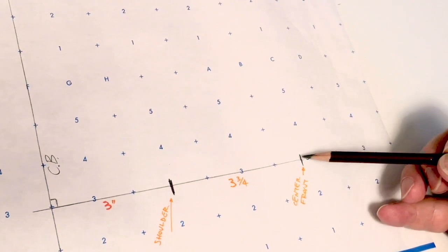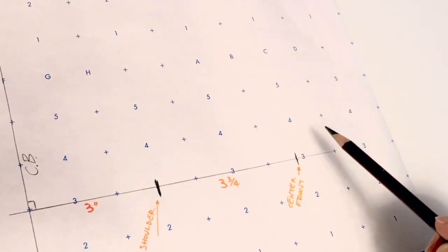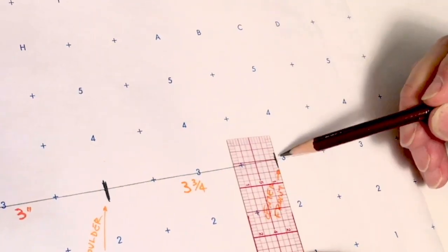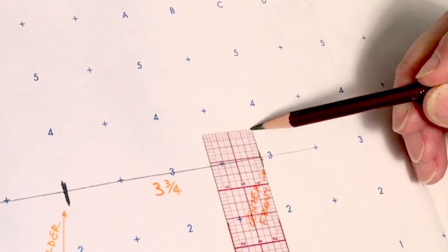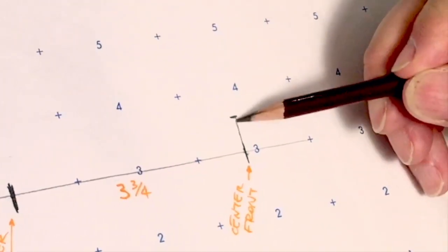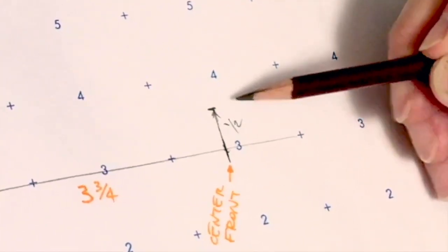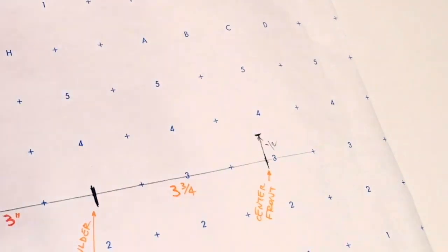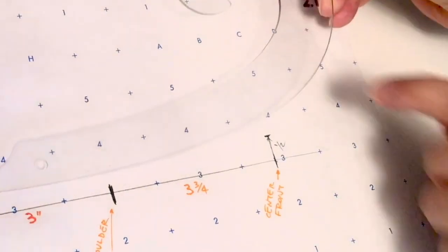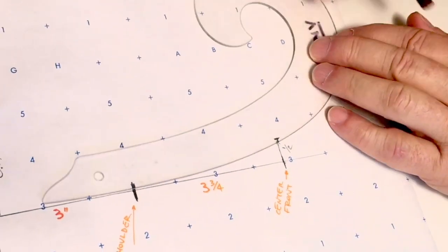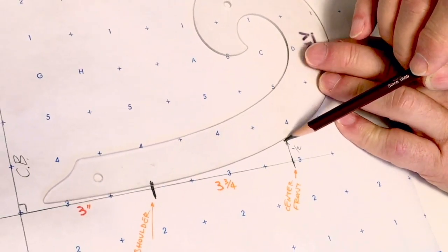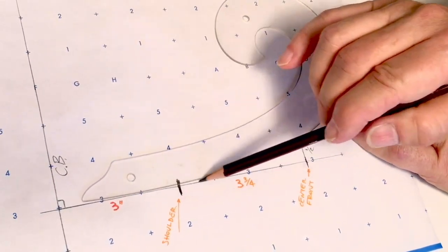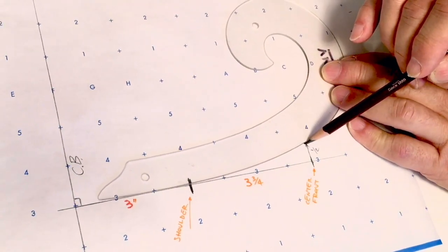Next, from our center front cross mark, we're going to measure up half an inch and put a little cross mark. Next, with our French curve or hip curve, we're going to place the ruler right at that half-inch cross mark, blending into the shoulder neckline cross mark, just like this.